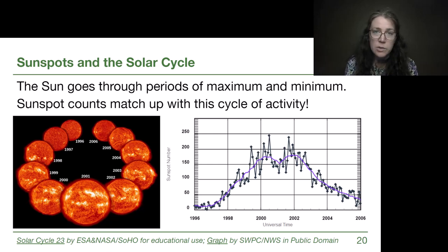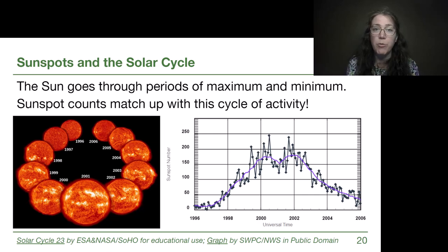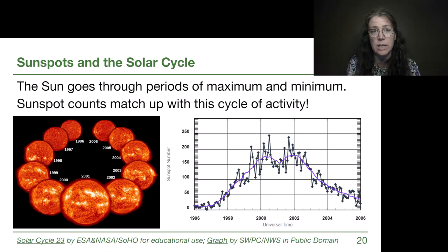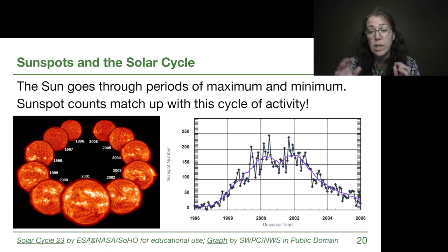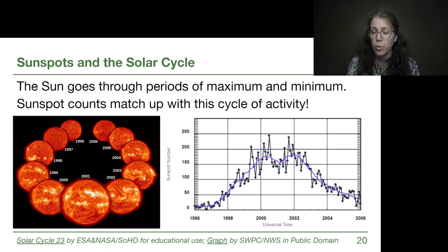We've been tracking this for quite a while as a human race. One of the things we have been able to track for many centuries is the number of sunspots. Astronomers, both professional and amateur, have been tracking the number of visible sunspots in the photosphere from one day to the next, for centuries.